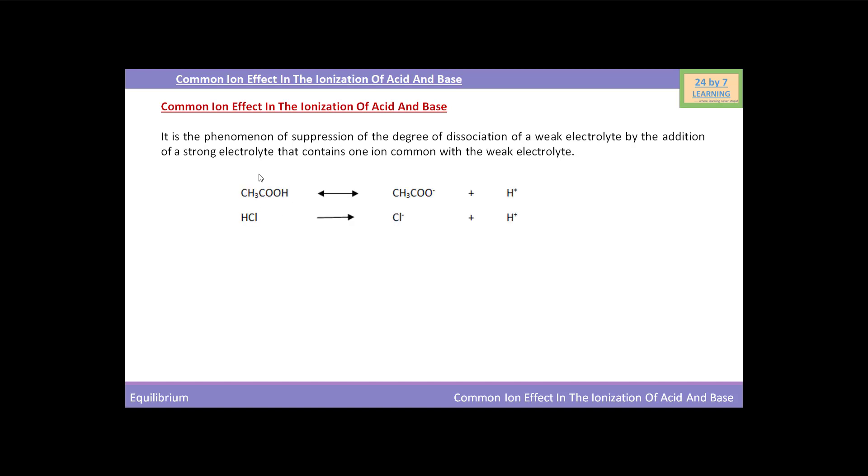For example, acetic acid dissociates and produces acetate ion plus hydrogen ion. Similarly, HCl dissociates to produce Cl⁻ ion and H⁺ ion.